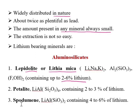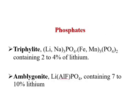The third important aluminosilicate ore used for extraction of lithium is spodumene, with formula LiAl(SiO₃)₂, containing four to six percent lithium. So the three aluminosilicate ores are lepidolite, petalite, and spodumene. The other class of lithium ores is phosphates, which include triphylite — containing two to four percent lithium — and amblygonite, which contains seven to ten percent lithium.